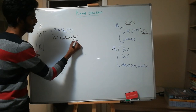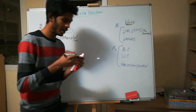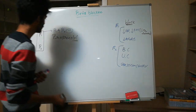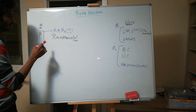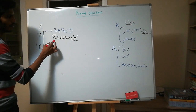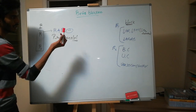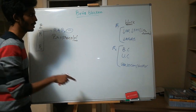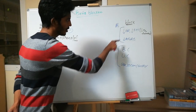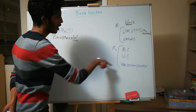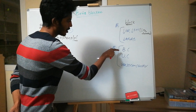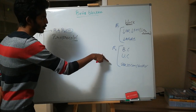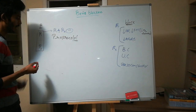Propranolol blocks both beta 1 and beta 2. The effects of using propranolol: heart rate decreases, force of contraction decreases, activity of RAS decreases, bronchus will constrict, uterus will constrict, and blood vessels will constrict.